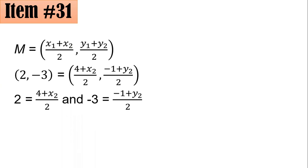Solving for the first equation, multiplying both sides by 2 gives 4 = 4 + x₂. Subtract 4 from both sides, you have 0 = x₂.